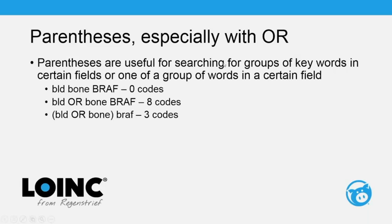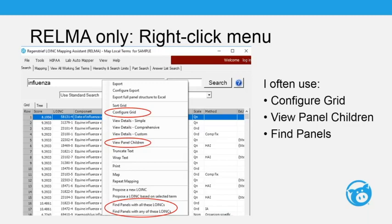Parentheses are very useful, especially with the 'or' operator. When searching without parentheses, the default is 'and' — so 'blood bone BRAF' means all three must appear and returns zero codes. Adding 'or' without parentheses gives eight codes. But using parentheses as '(blood or bone) BRAF' correctly returns three codes for the BRAF gene in either blood or bone marrow.